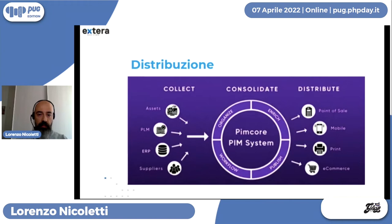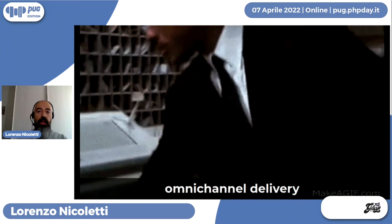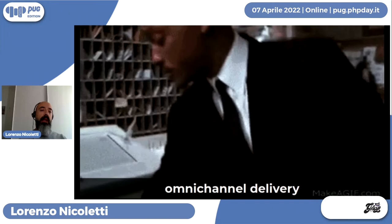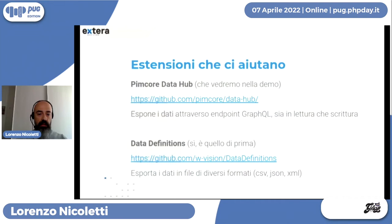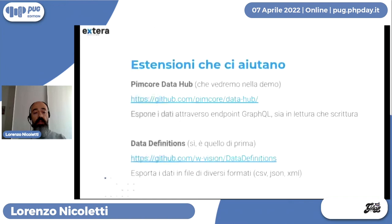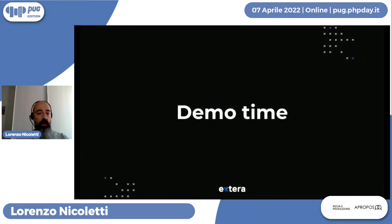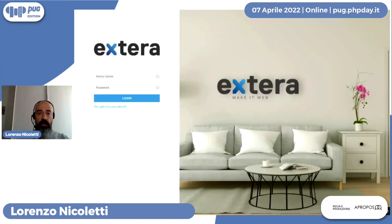L'ultima fase è la distribuzione: dopo aver centralizzato e consolidato tutte le informazioni, siamo pronti a distribuirle su tutti i canali. Data Hub permette di esporre endpoint GraphQL sia in lettura che in scrittura in maniera capillare. Se serve un altro tipo di esportazione, il plugin Data Definitions di Vision esporta file in diversi formati: CSV, JSON e XML.